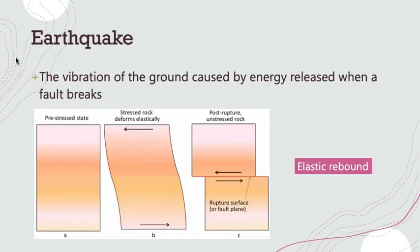An earthquake could be defined as the vibration of the ground from waves of energy released when a fault breaks. Faults form where stresses acting on the crust cause brittle deformation. Typically, movement along these fractures happens intermittently in sudden bursts, which might be separated by hundreds or even thousands of years. Faults break or rupture when the pent-up strain in the rocks on either side of the fault overcomes the frictional resistance that was preventing movement along the fault.